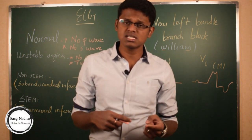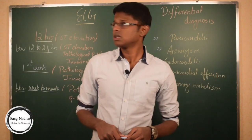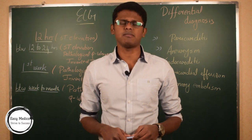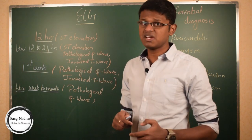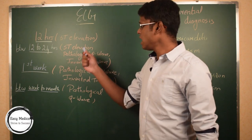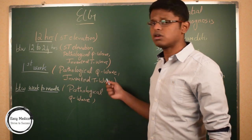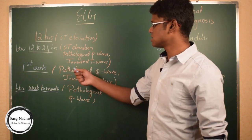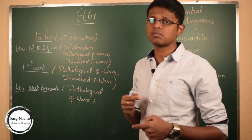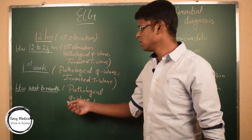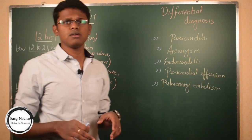Now let's discuss differential diagnosis and the duration-based ECG changes in myocardial infarction. Based on duration, ECG differs. Within 12 hours, there is just ST-segment elevation. Between 12 to 24 hours, there is ST-segment elevation, pathological Q-wave, and inverted T-wave. In the first week, you may see pathological Q-wave and inverted T-wave, with absence of ST-segment elevation. Between weeks to months, the pathological Q-wave only persists for a long duration.